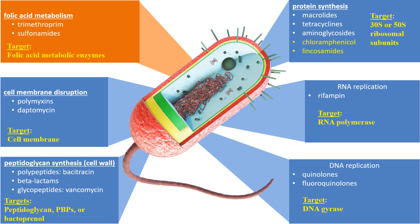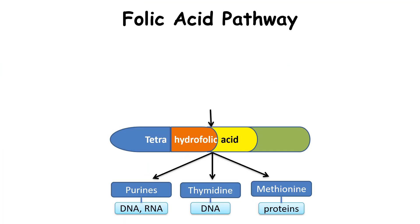The third mode of action is to prevent folic acid metabolism. Bacteria need to make folic acid, unlike us — we get folic acid from our diet. However, bacteria cannot take folic acid from their environment; they must make it. Folic acid is important because it's a precursor to making adenine and thymine, two nucleic acids that help make up DNA. Thus, DNA synthesis is prevented if the bacteria cannot make its folic acid. In order to understand this, let's go through the folic acid pathway — it's a multi-step pathway.